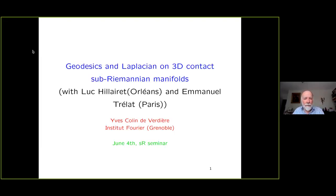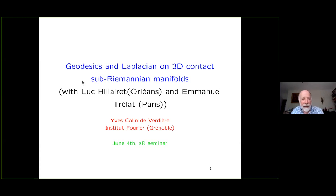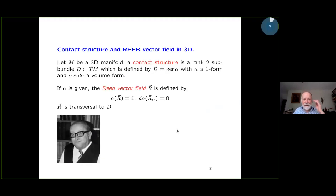This talk is about spectral geometry in sub-Riemannian manifolds, staying in the simplest case which is a 3D contact manifold. You will see some results and mainly two conjectures which I will try to motivate — there is a lot to do for people who want to work in this area. I start with acknowledgment of my collaborators, Luke and Emmanuel.